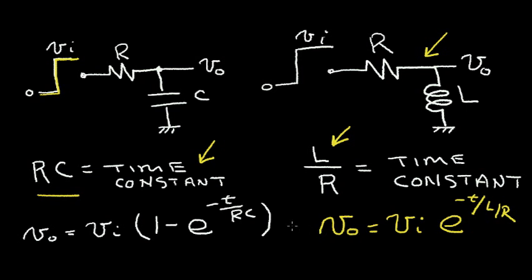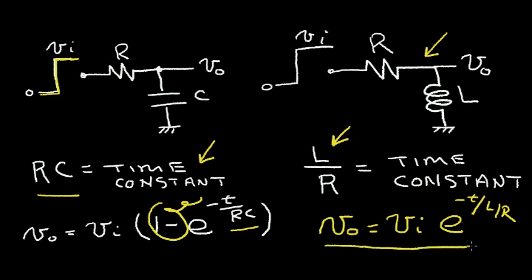So we get an equation that's a little similar. For example, if we take the '1 minus' term and remove it, and we replace RC with L divided by R, we get the equation for the RL circuit.